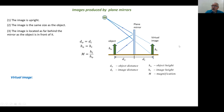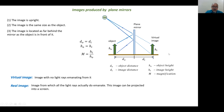A virtual image is an image with no light rays actually emanating from it — the rays only appear to come from the object. For a real image, all light rays actually do emanate from that point, and this image can be projected onto a screen. With a virtual image behind a mirror, placing a screen there would be impossible — you cannot project it because the image is virtual.